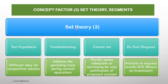Concept Factor: SETA Theory Segments. SETA Theory Segments include Test Hypothesis, Troubleshooting, Cannot Not, and Due Point Diagram — four parameters constituting SETA Theory. Test Hypothesis covers different ideas for competitive solutions. Troubleshooting addresses persisting issues during normal operations or when there is trouble. Cannot Not refers to justification of definition of being implemented — how they cannot not be implemented. Due Point Diagrams provide analysis to express breaks, ROI — Return on Investment — and how the rate of investment can be determined.